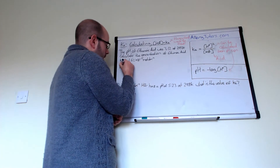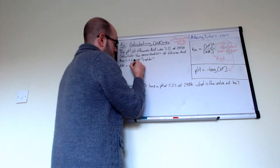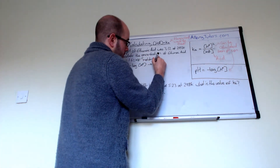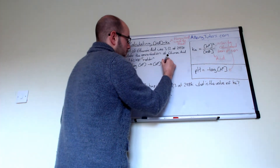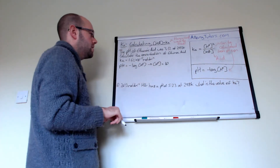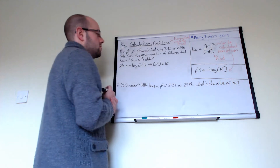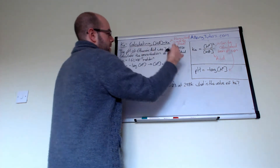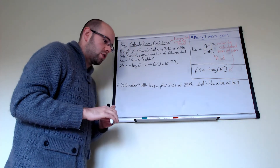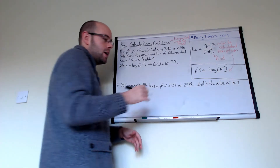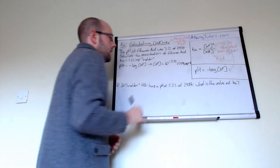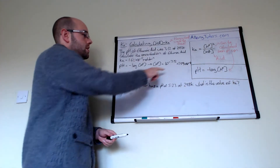pH equals the minus log of H⁺. We need to rearrange this to get H⁺, so H⁺ equals the anti-log — press shift log and you should get a little 10 in the calculator — of the minus pH. The pH is 3.12, and if we put that in our calculator we should get a concentration of H⁺ of 7.59 × 10⁻⁴ moles per decimetre cubed.